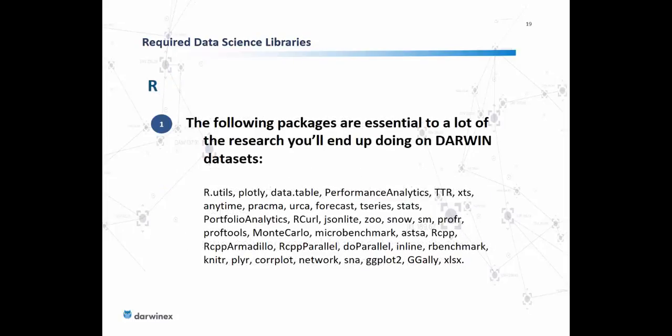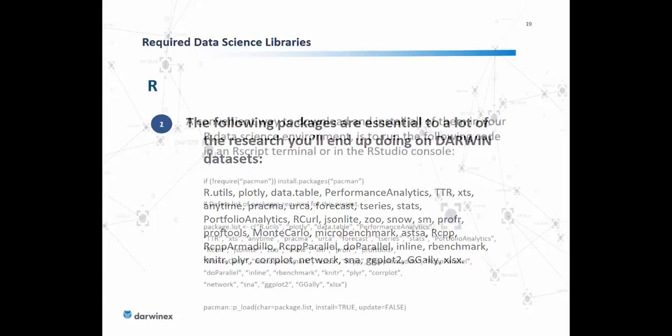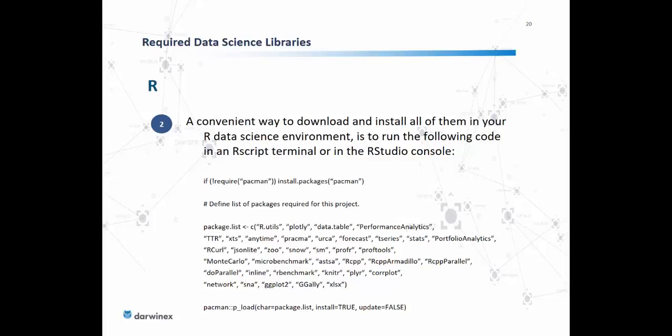For R, there is a list of packages that we've put together here — though it may be difficult to read on screen. If you visit the complementing blog post on blog.darwinext.com, you'll find the list along with code allowing you to copy-paste into your environment and download and install all of these libraries in one go. Simply copy-paste the code into an R terminal, execute, and you should have all these libraries downloaded directly from the CRAN R project repository.